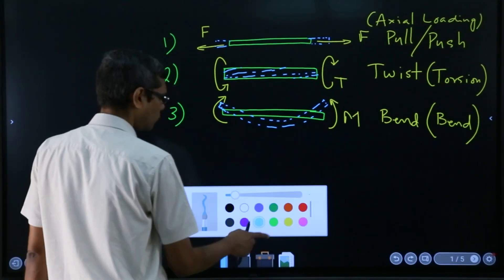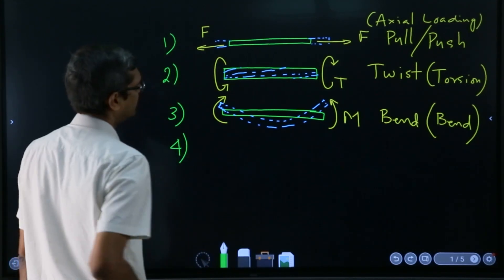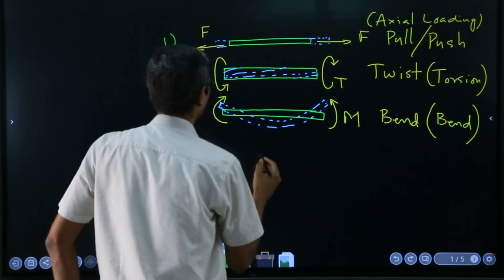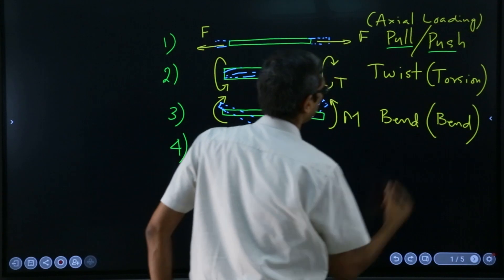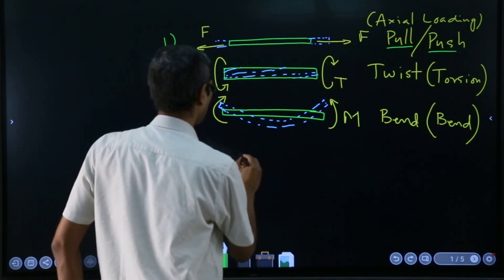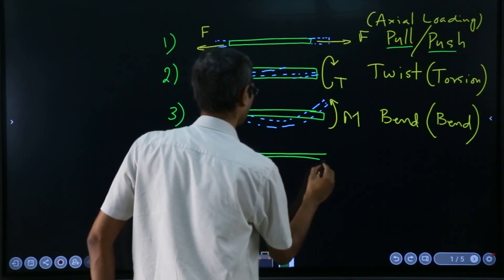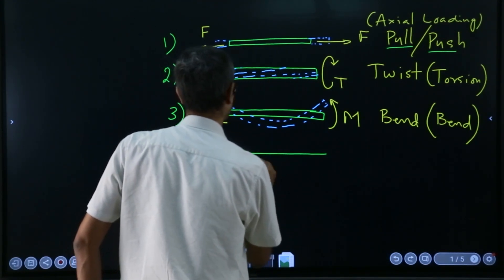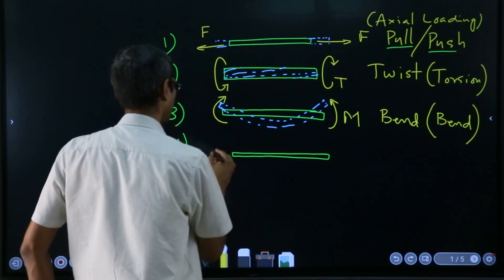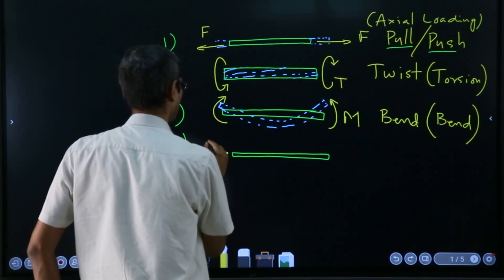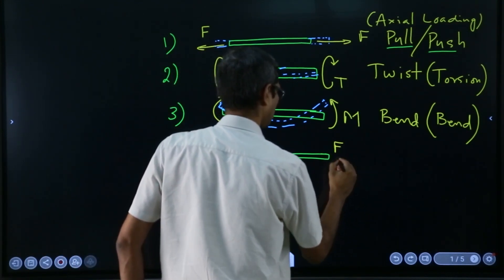And then the fourth one, which is again this type of a thing—but see here either a pull or a push was being used. But in this fourth one, only a push will be there.